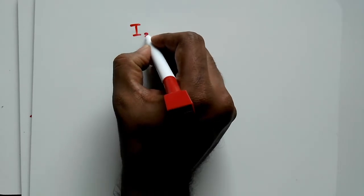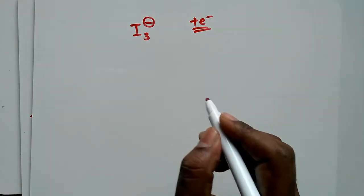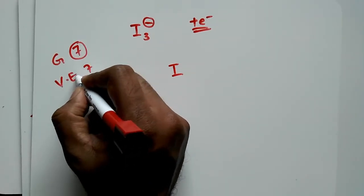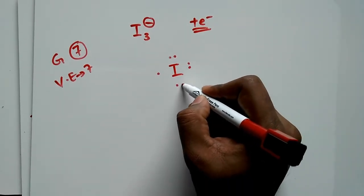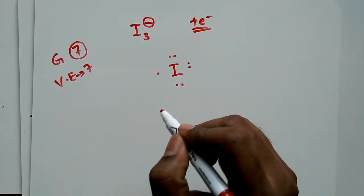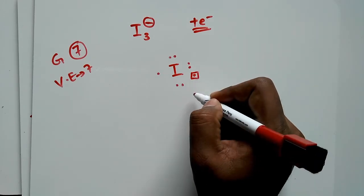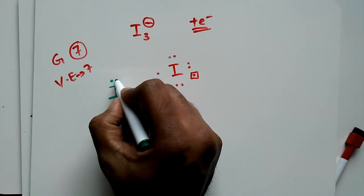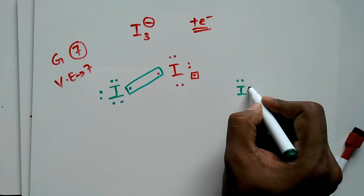In the next case, we have I3-, so there is a negative charge. Negative charge means we have to add one electron to the structure. The central iodine again belongs to group 7, so valence electrons will be 7. Since a negative charge is there, we add one electron here. From the periphery, two iodines approach, each with 7 valence electrons, combining with the central iodine's electrons.